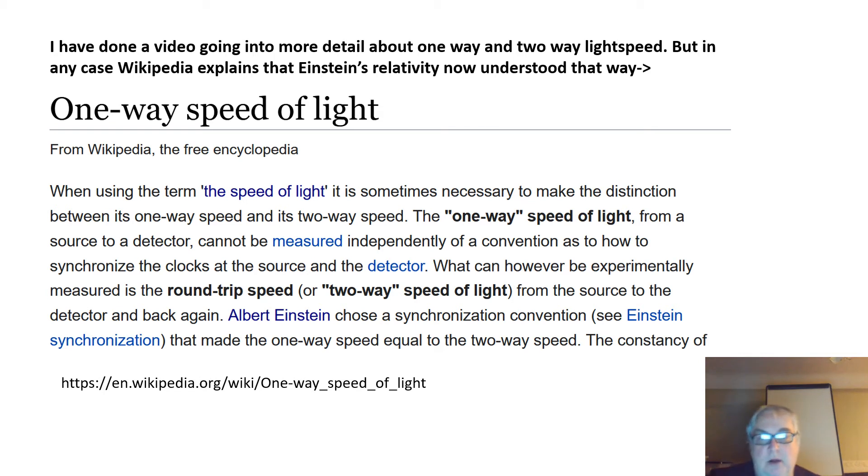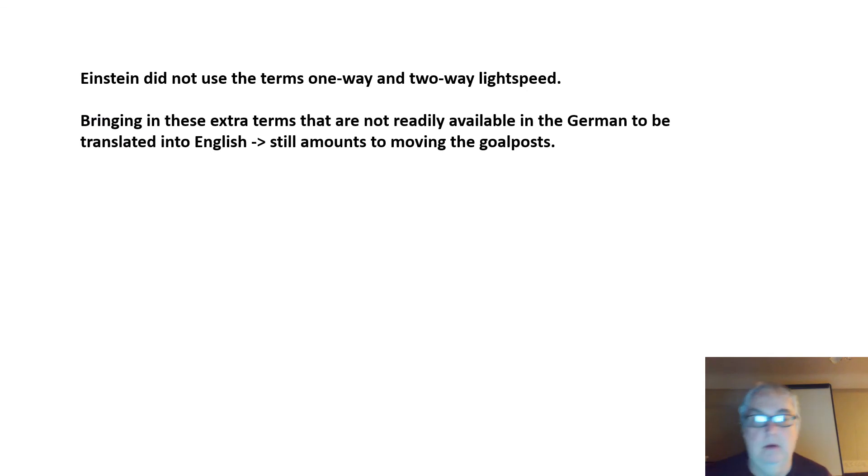So basically, when Einstein talks about the speed of light in his 1905 paper, it now has to be clarified by talking about one-way light speed and two-way light speed. And that's not something Einstein does in his paper. Einstein did not use the terms one-way and two-way light speed in his 1905 paper.